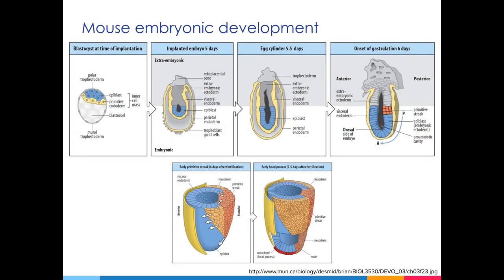In mice, the epiblast is shaped like a cup instead of a flat disc — a peculiarity of rodent embryos — but gastrulation in rodents and mammals is otherwise very similar. The epiblast sits above the hypoblast, or primitive endoderm, which in mice is referred to as the visceral endoderm because it is the portion of the primitive endoderm in contact with the epiblast. The epiblast curves into a U-shape or cup-like structure, and the interior cavity formed is the amniotic cavity. The primitive streak begins as a thickening at the edge of the cup on one side, marking the future posterior of the embryo.